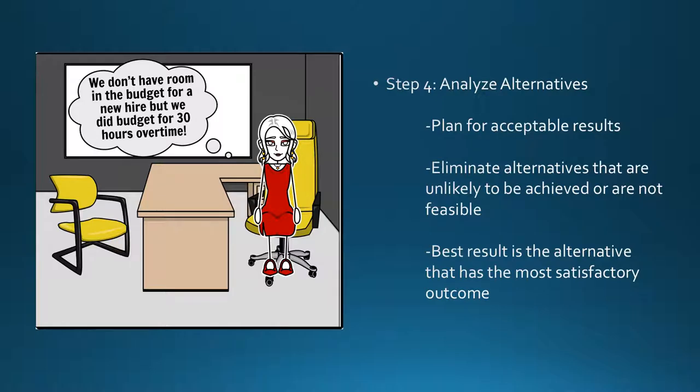Step 4: Analyze alternatives. Plan for acceptable results. Eliminate alternatives that are unlikely to be achieved or are not feasible. Best result is the alternative that has the most satisfactory outcome. We don't have room in the budget for a new hire, but we did budget for 30 hours overtime.